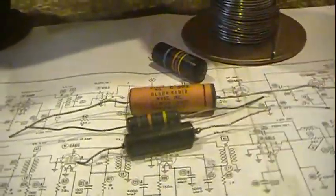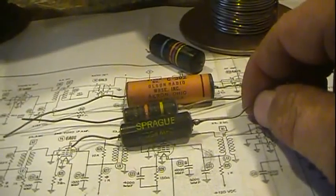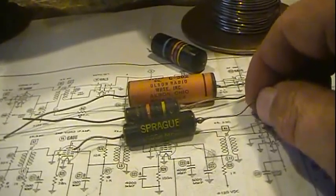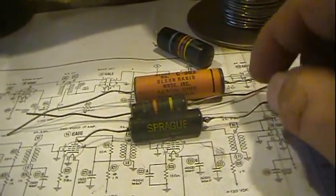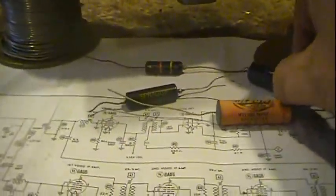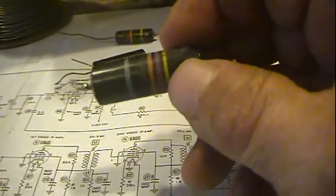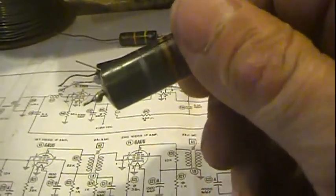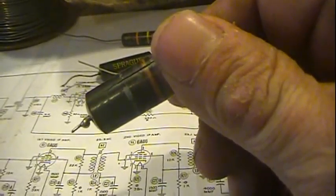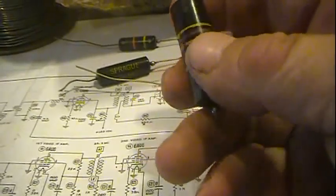One last little thing too is here's a new old stock bumblebee cap. Bumblebee caps have stripes. They're just straight black bodied, especially Spragues, actually, because they're the ones that coined the name as part of their advertising: Black Beauty. Okay, want to clarify that.